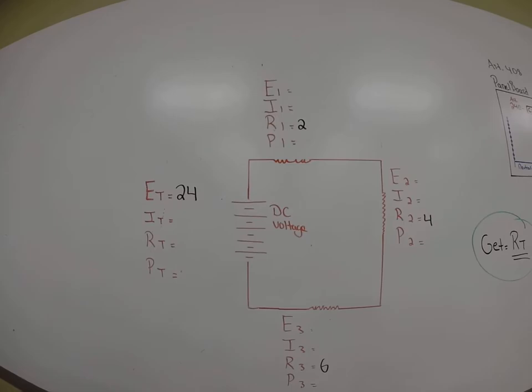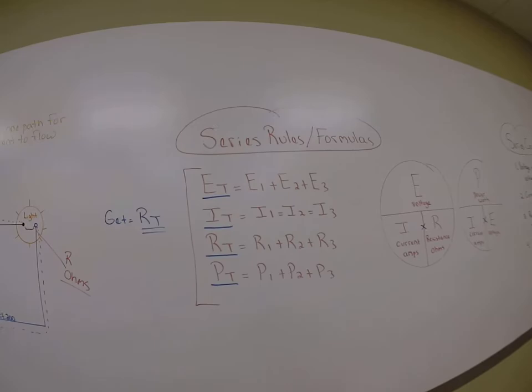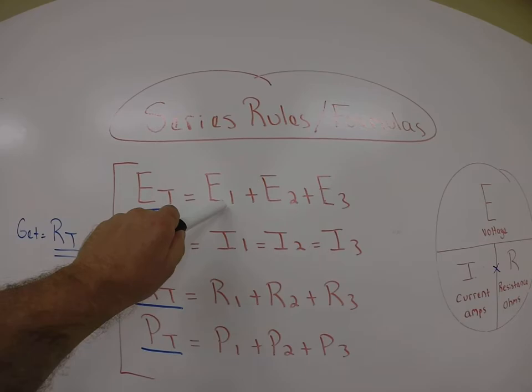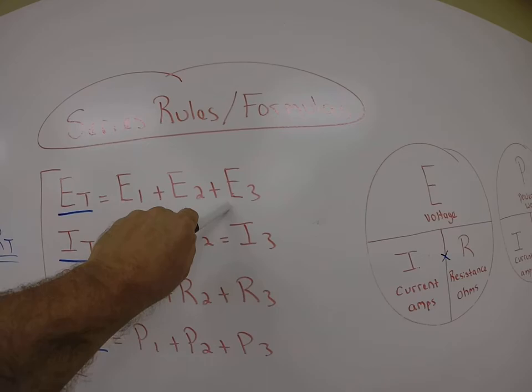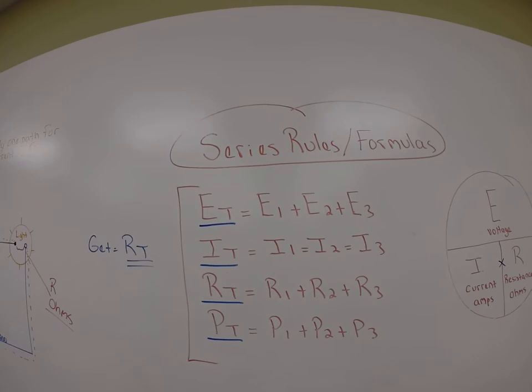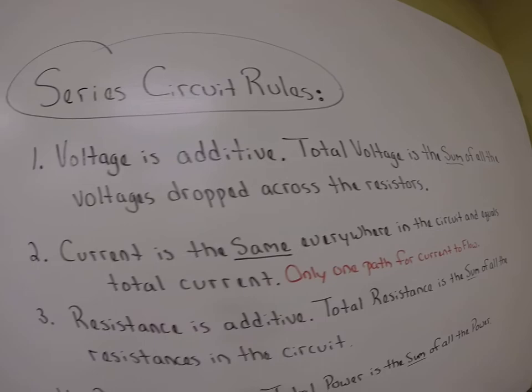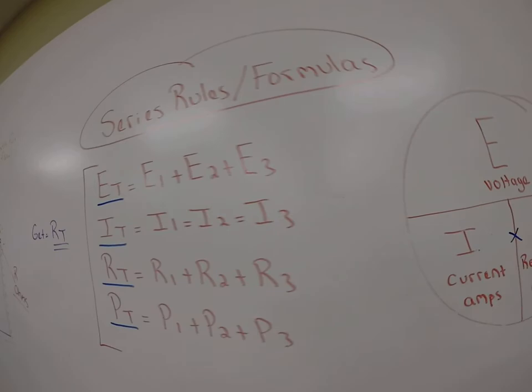There are rules to a series circuit that apply to this formula. Over here we have rules, series rules, formulas. One way of confirming if you've got your math right is the total voltage in the circuit should equal the voltage drop across resistor one plus the voltage drop across resistor two plus the voltage drop across resistor three. In other words, voltage is additive in a series circuit. Total voltage is the sum of all the voltage drops across the resistors.